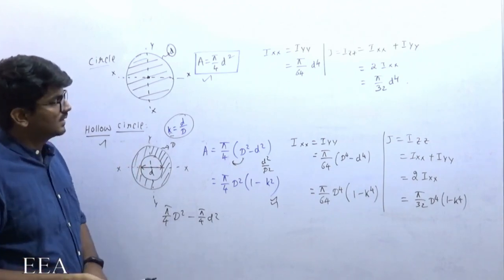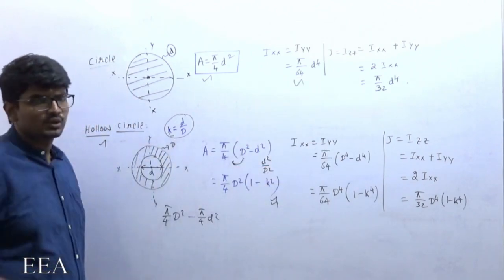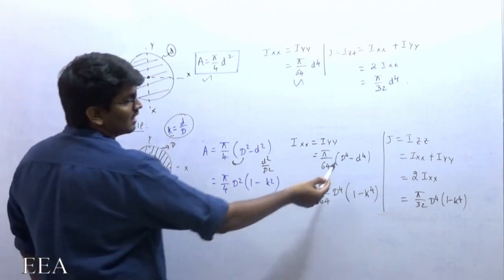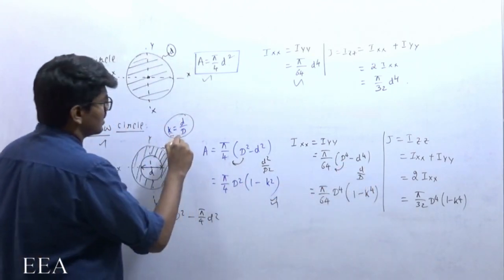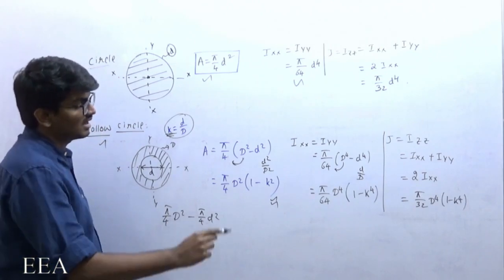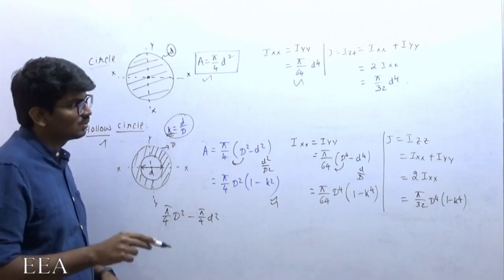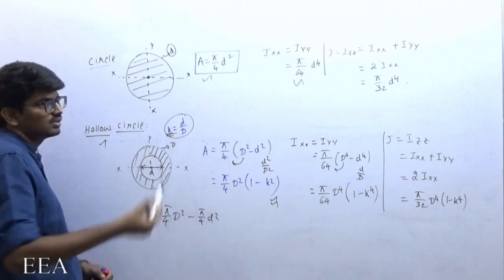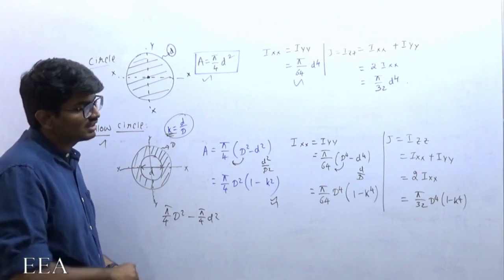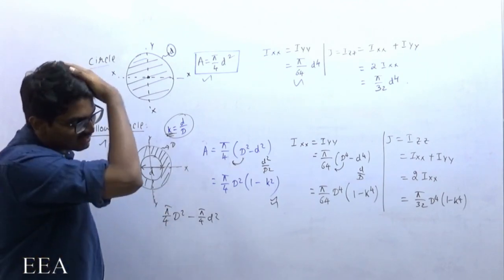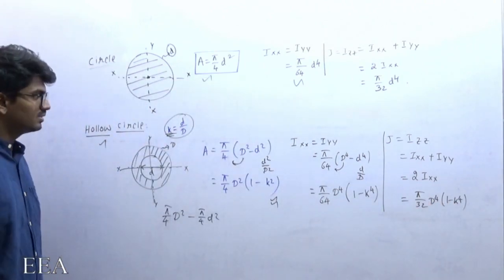For the hollow cylinder, Ixx = Iyy = π/64 · (D⁴ − d⁴). Taking D⁴ common outside, and substituting k = d/D, this becomes π/64 · D⁴(1 − k⁴). The polar moment of inertia J = Ixx + Iyy = 2·Ixx = π/32 · D⁴(1 − k⁴).